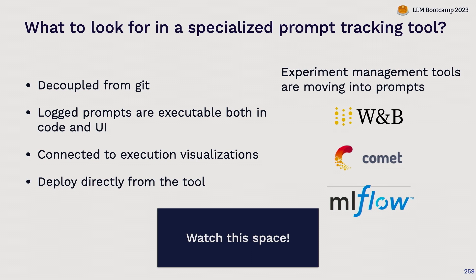Some things I'd look for if building a tool like this: I'd want to decouple prompts from Git — have Git as the source of truth, but allow non-technical stakeholders to test prompt changes without going through Git. Because in a lot of organizations, the people best suited to write the prompts are not the software engineers or ML engineers. They're the people who care about the task. Everyone's used ChatGPT at this point — writing a prompt is not restricted to people with technical training. A really desirable property is the ability to involve non-technical stakeholders in a way that doesn't compromise the quality of the rest of your code.